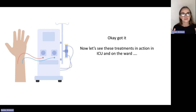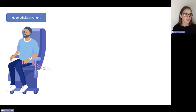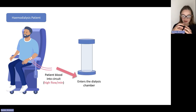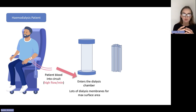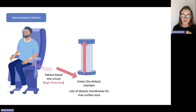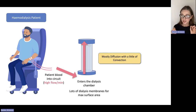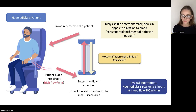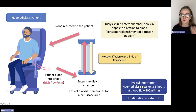Now let's see how these treatments differ when patients are connected to them. For hemodialysis, we connect the patient to the machine, their blood leaves them and goes through the circuit at fairly high flows — typically 300 mils per minute. Their blood is put through the dialysis chamber, which contains many semi-permeable membranes arranged in little straws to increase surface area for diffusion. What's happening here is mostly diffusion with just a smidge of convection, and that cleaned blood is returned to the patient. Alongside this, dialysis fluid moves in the opposite direction to maximise the diffusion gradient. Patients are typically connected for three to five hours at these high blood flows, and if we remove fluid in this process, that's known as ultrafiltration.